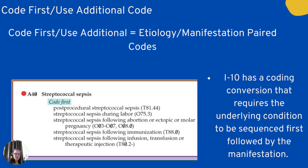Code first or use additional codes — let's look at streptococcal sepsis. Code first means you code certain conditions before you use the streptococcal sepsis code. ICD-10 has a coding convention that requires the underlying condition to be sequenced first, followed by the manifestation.